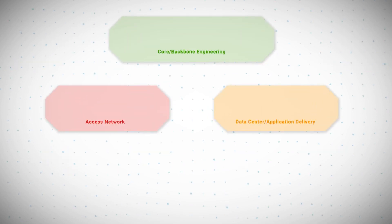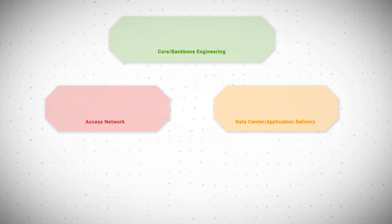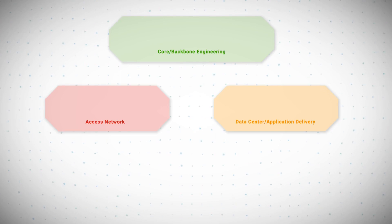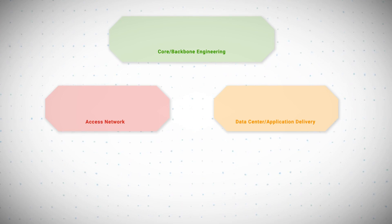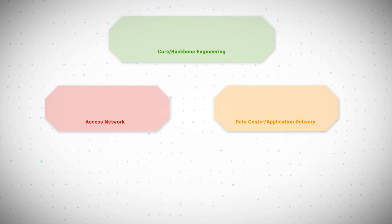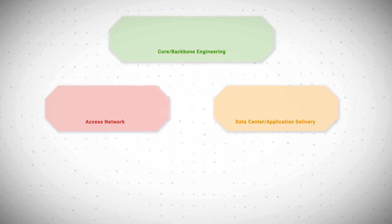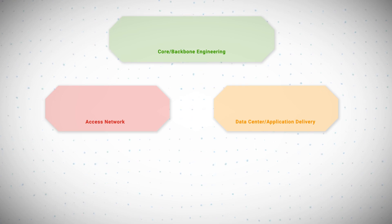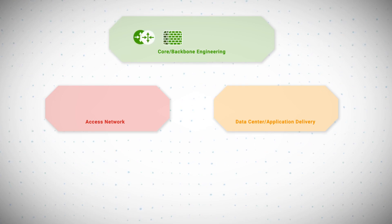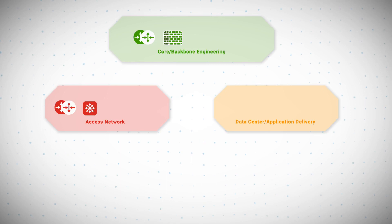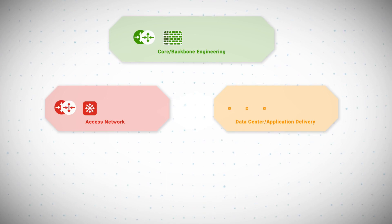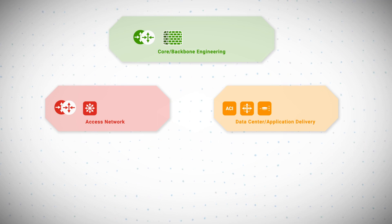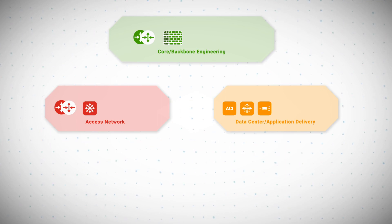Allow me to illustrate this for you. Here we have three functional groups across our organization: core backbone engineering, access, and applications delivery. Each group provides a specific function in delivering an application to the customer, such as general transport or routing in the backbone, customer connectivity over our access layers, or application delivery within our data center. While they all deliver a common service, they have very different needs when it comes to automation.